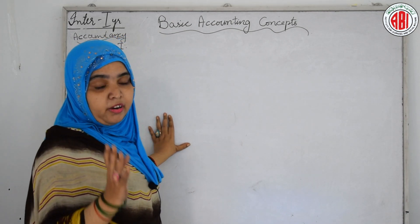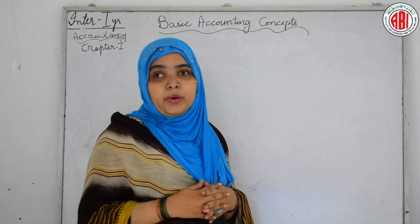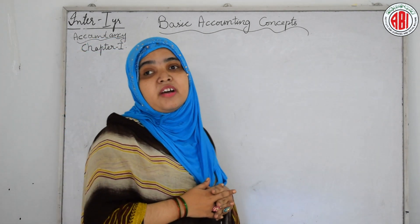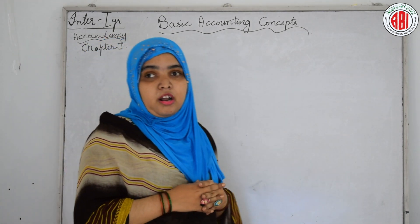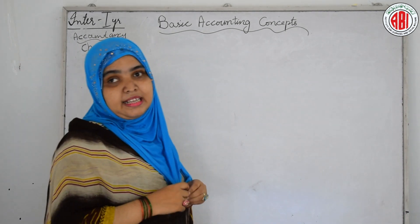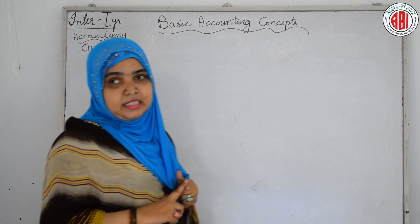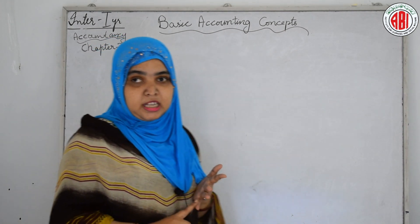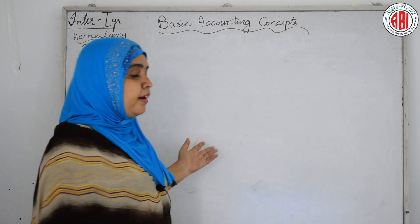Our next basic accounting concept is transaction. A transaction is an event that occurs in the business and it changes the financial position of the business. Transactions are of two types: cash transactions and credit transactions. Examples of transactions are purchases, sales, commission paid, salary paid, expenses paid, and anything received or paid off.